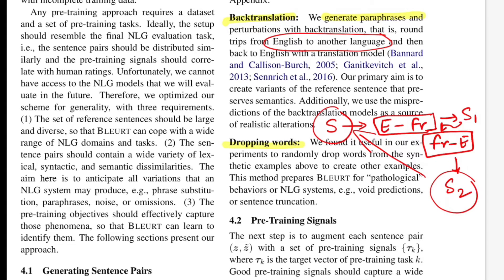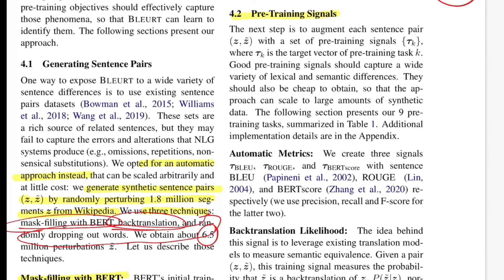The last scheme is dropping words — they found it useful to randomly drop words from the synthetic examples to create additional examples, essentially getting a newer version of the input sentence. By now they have the dataset of input samples and their perturbed versions ready. The perturbation schemes chosen do not drastically vary the sentence in syntactic or semantic sense. The next step is to augment each sentence with a pre-training signal T_k, which the model will optimize and which plays a role in backpropagation. Good pre-training signals should capture a wide variety of lexical and semantic differences while being cheap to obtain.